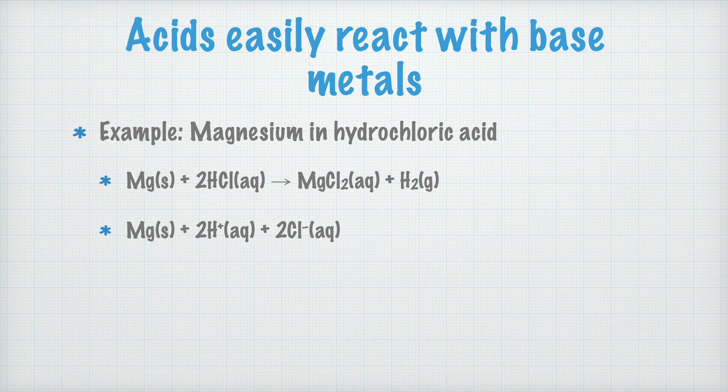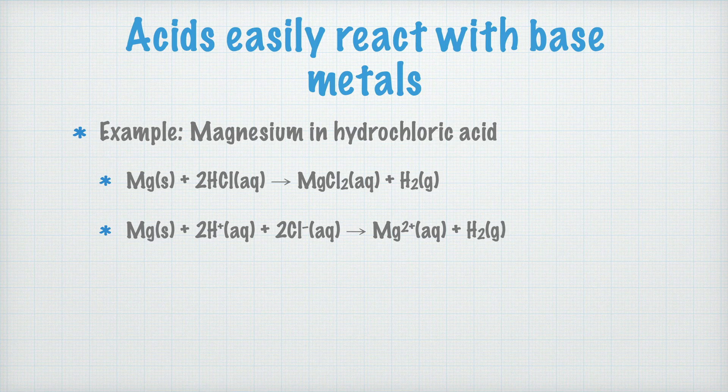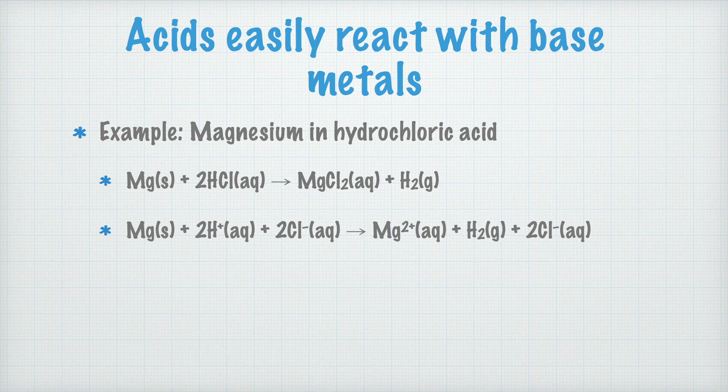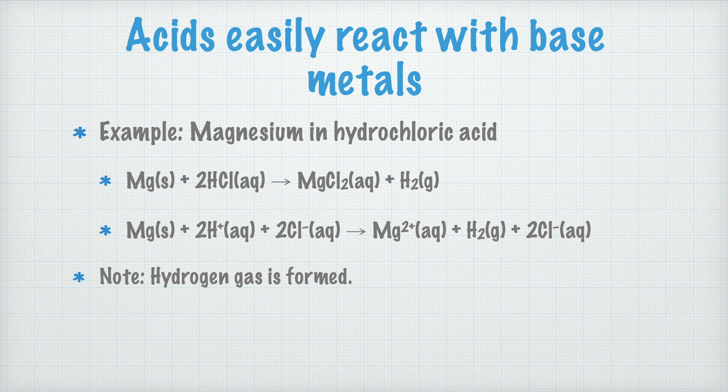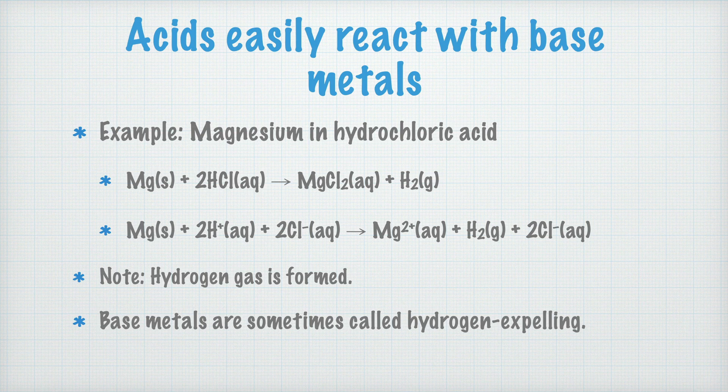The magnesium is then oxidized to magnesium ions, they too in solution, while the hydrogen ions are reduced to hydrogen gas. The chloride ions, well, nothing really happens to them, making them spectator ions. So, what I want you to notice is that hydrogen gas forms. Because of this, base metals are sometimes called hydrogen expelling. They, so to speak, expel hydrogen from acidic solutions. This is a very common reaction with base metals.